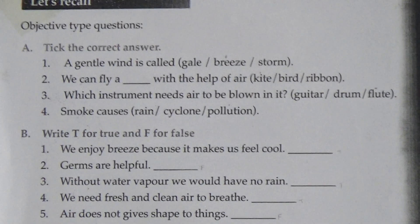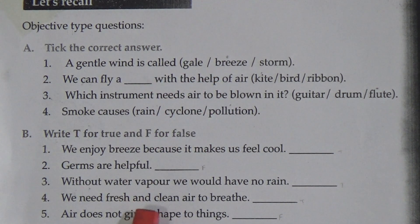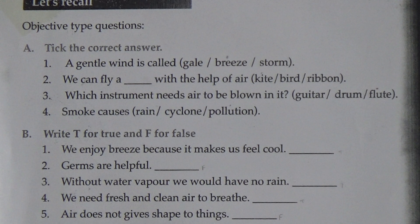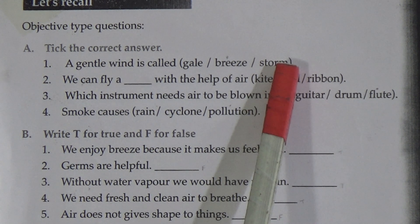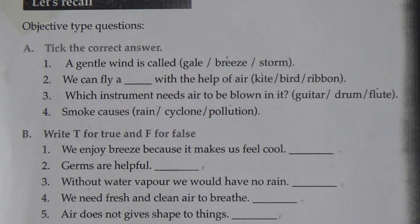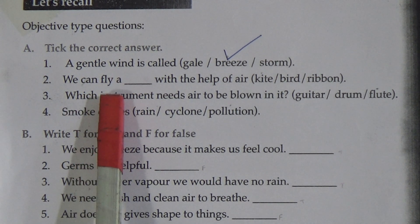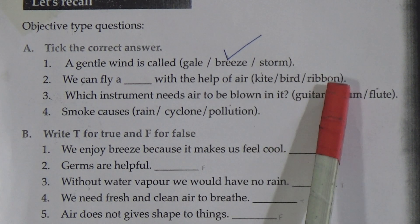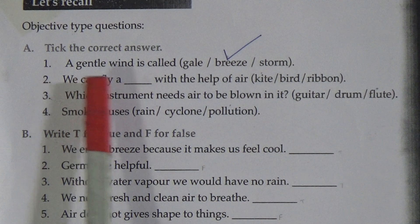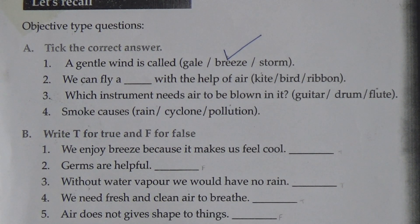Our today's chapter name is 'The Need for Air.' In this chapter there are some exercises: tick the correct answer, true/false, matching, and fill in the blanks. Exercise A — tick the correct answer. Number 1: a gentle wind is called — gale, breeze, or storm. A gentle wind is called breeze, so we put the tick mark on breeze. Number 2: we can fly a dash with the help of air — kite, bird, or ribbon. We can fly a kite with the help of air, so we put the tick mark on kite.